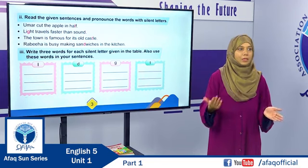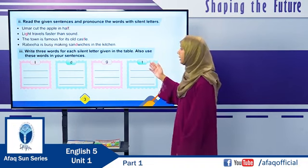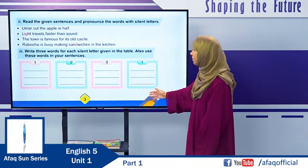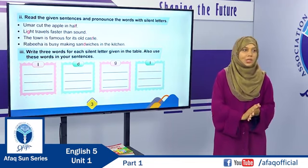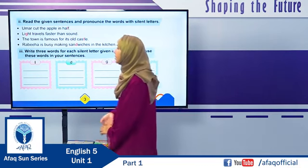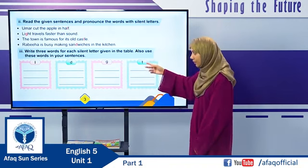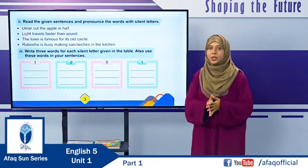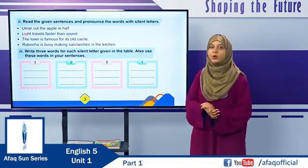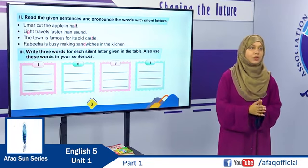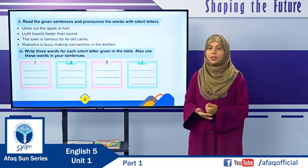Now we have read different examples of silent letters. I want you to write three more words with each of these silent letters given in the table on page 3 of your textbook — L, D, G, and T. You have to find three words for each and then use those words in sentences of your own. You can write five sentences in your notebook and make other sentences orally. You can also find words from the story An Orphan's Eid.